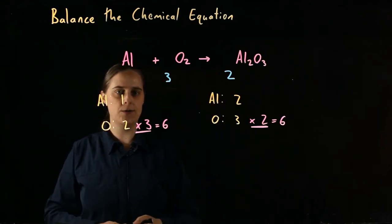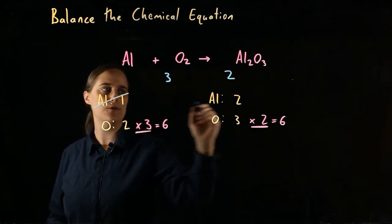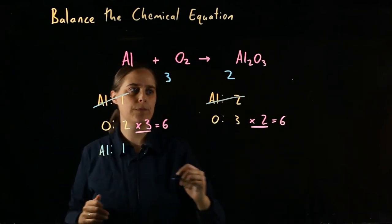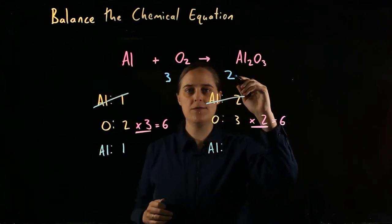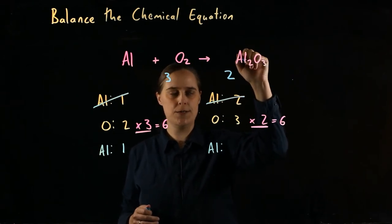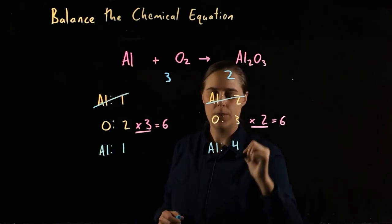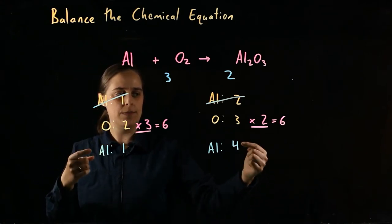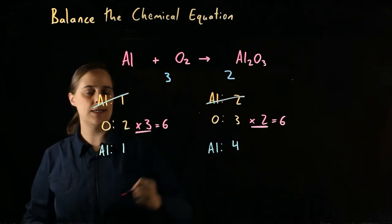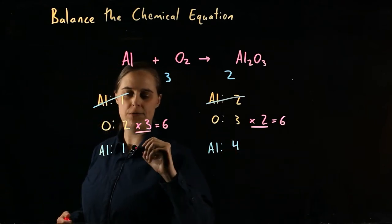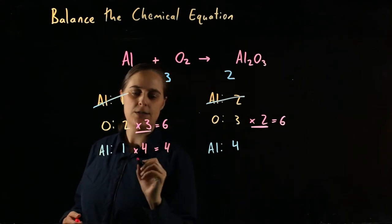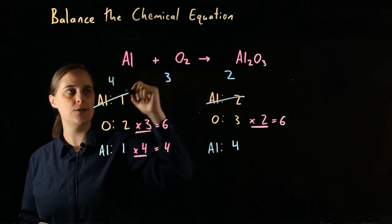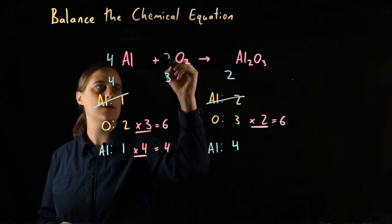Keeping this three-to-two ratio in mind, let's count our aluminums again. Before the reaction, we still have one aluminum atom. After the reaction, if we assume two aluminum oxide molecules, each with two aluminum atoms, then two times two is four. So now balancing aluminum: one times what equals four? That's four. We need four aluminum atoms. Our stoichiometric coefficients are four, three, two.